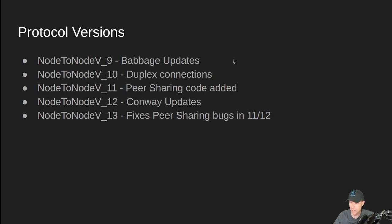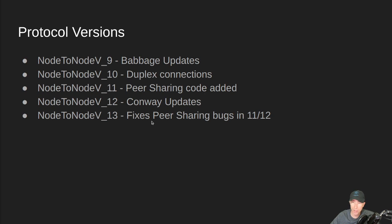If both nodes handshake at version 13, you get all the capabilities — all the bidirectional capabilities, all the peer sharing, all of that. So it's important that if you haven't upgraded your node to 8.7.3, you'll want to start moving in that direction pretty soon. I think we're around 25% of the network that has moved over so far.